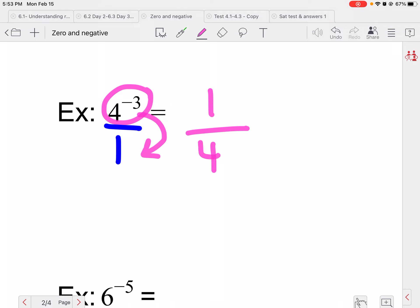Whatever base has a negative exponent, so 4 to the negative third has a negative exponent, I move it down and it can become positive. Since there's nothing left on the top, we put a one there.